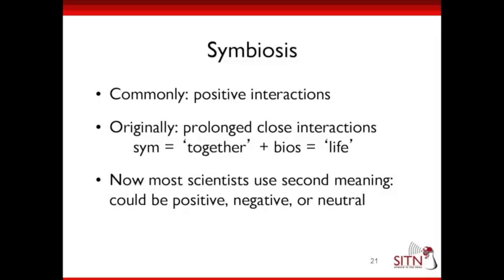One example: plants, which form the basis of all our food on the planet, actually evolved from two different organisms coming together. The structures able to use sunlight for energy originally came from a bacterium and another early organism that engulfed it — the two working together produced the early ancestors of plants. This is called symbiosis. It's commonly thought of as positive interactions, but originally it meant prolonged close interactions — sym meaning together and bios meaning life. Most scientists now use this meaning, and it can be positive, negative, or neutral.